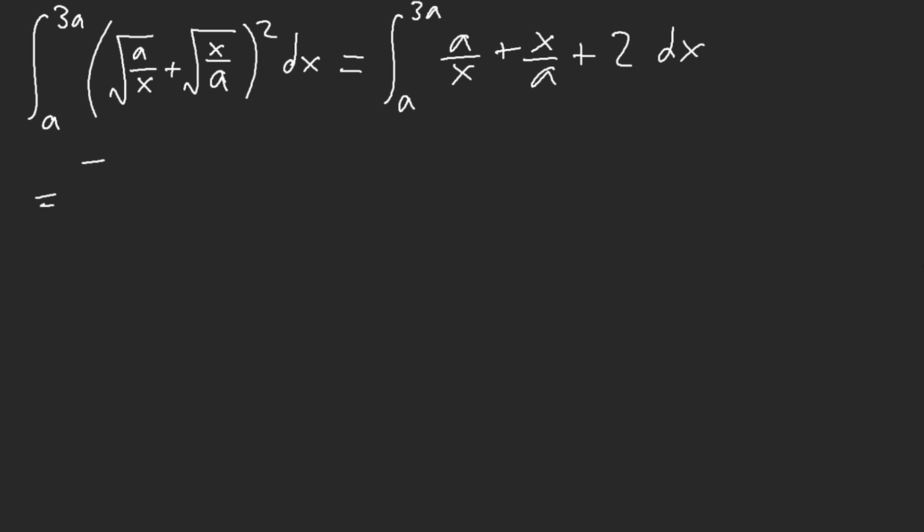So now this is just equal to - don't get hallucinated, this is minus - I'm sorry, a ln of absolute value x plus x squared over 2a, and then plus 2x from a to 3a.